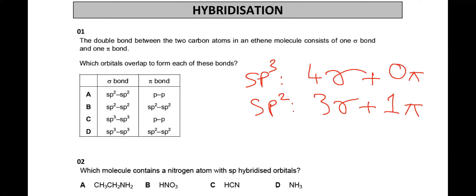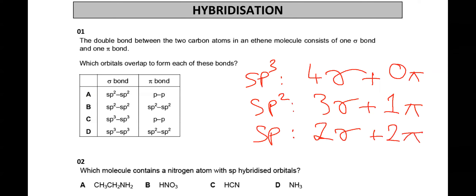For SP hybridization, it will make two sigma and two pi bonds. The third type is SP hybridization, where there are two sigma and two pi bonds — like a carbon-carbon triple bond in an alkyne molecule.